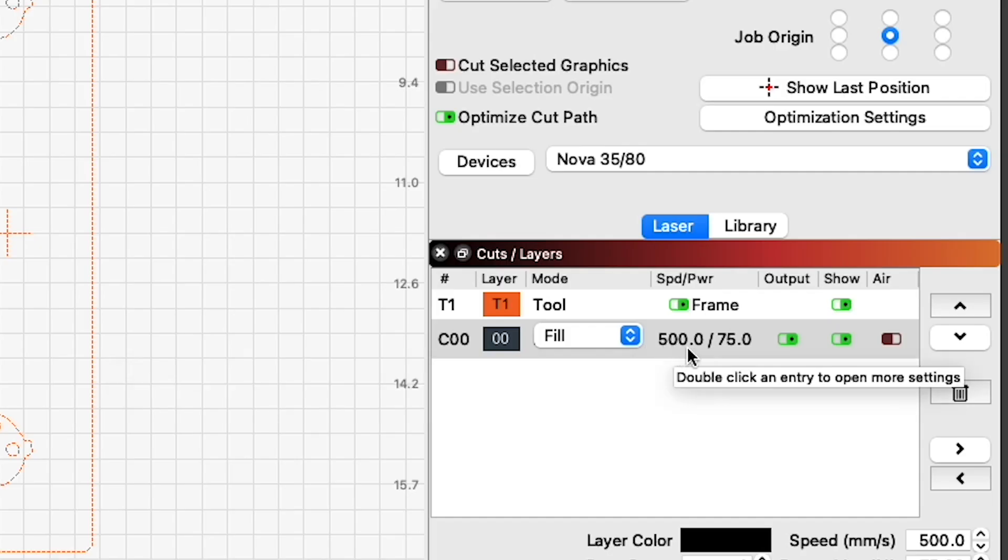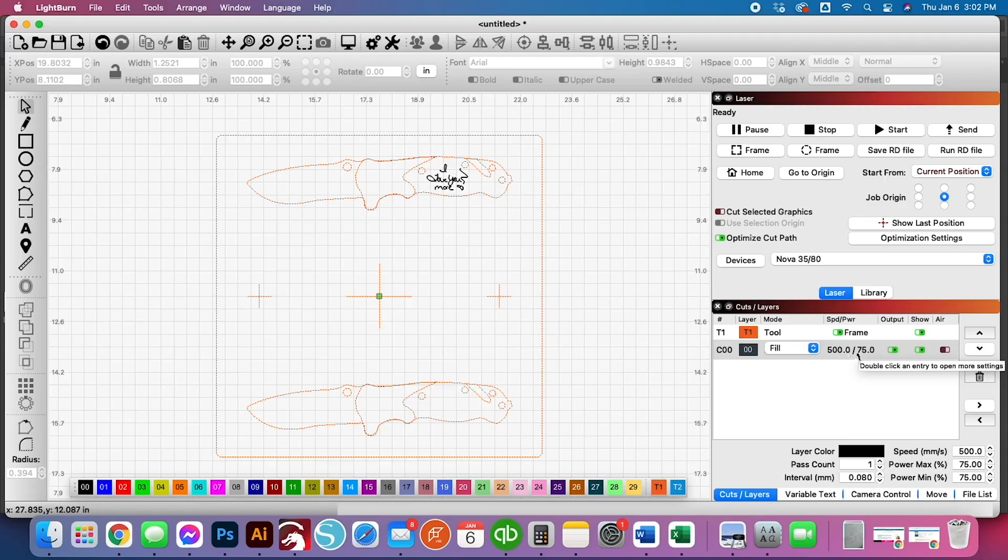There's no output on that, but the fill line here is our actual engrave. Our settings for engraving on these knives, we normally do these at 500 millimeters per second and 75% power. Again, this is on our Thunder Nova 35 80 watt laser, and that could change depending on what laser you have. But that is a starting point, at least for our machine with this particular knife. So 500mm/s at 75% is where we're at.